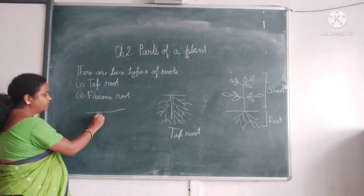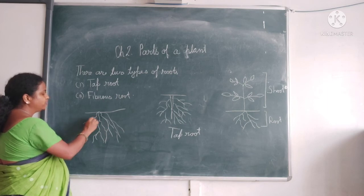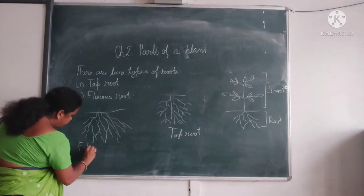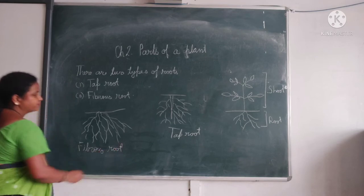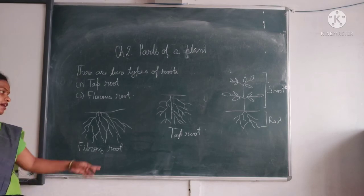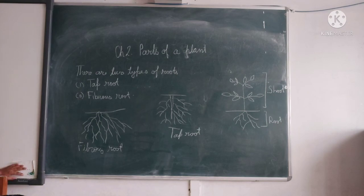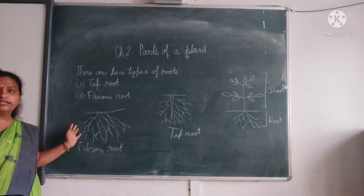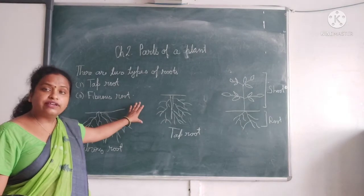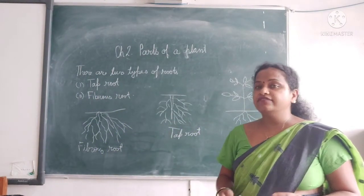What about fibrous roots? From the very start, fibrous roots have several branches — they do not have one main root. Just below the ground they start with branches. Taproot plants include mustard, mango, bean, radish, and carrot. Fibrous root plants include grass, peach, and maize. If you pluck grass from the garden, you will see the fibrous roots. If you pull out the root of peas, you will see one main root with several branches.